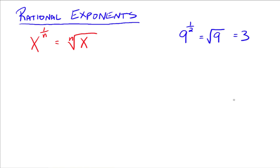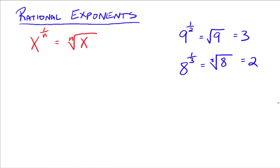So 9 to the 1 half power is really just a fancy way to write the number 3. The 1 half power means the square root. Say you've got 8 to the 1 third — the 3 in the exponent becomes the index in your radical, so you read that as the cube root of 8, which is 2. The denominator of your rational exponent becomes the index in your radical.